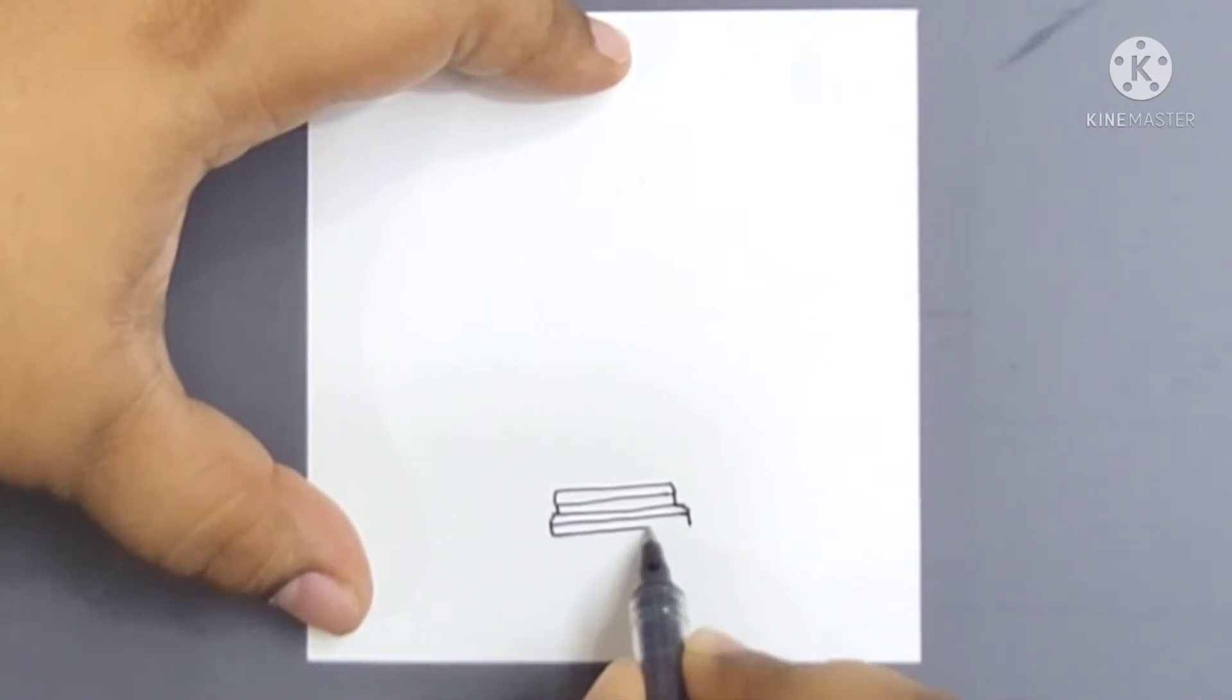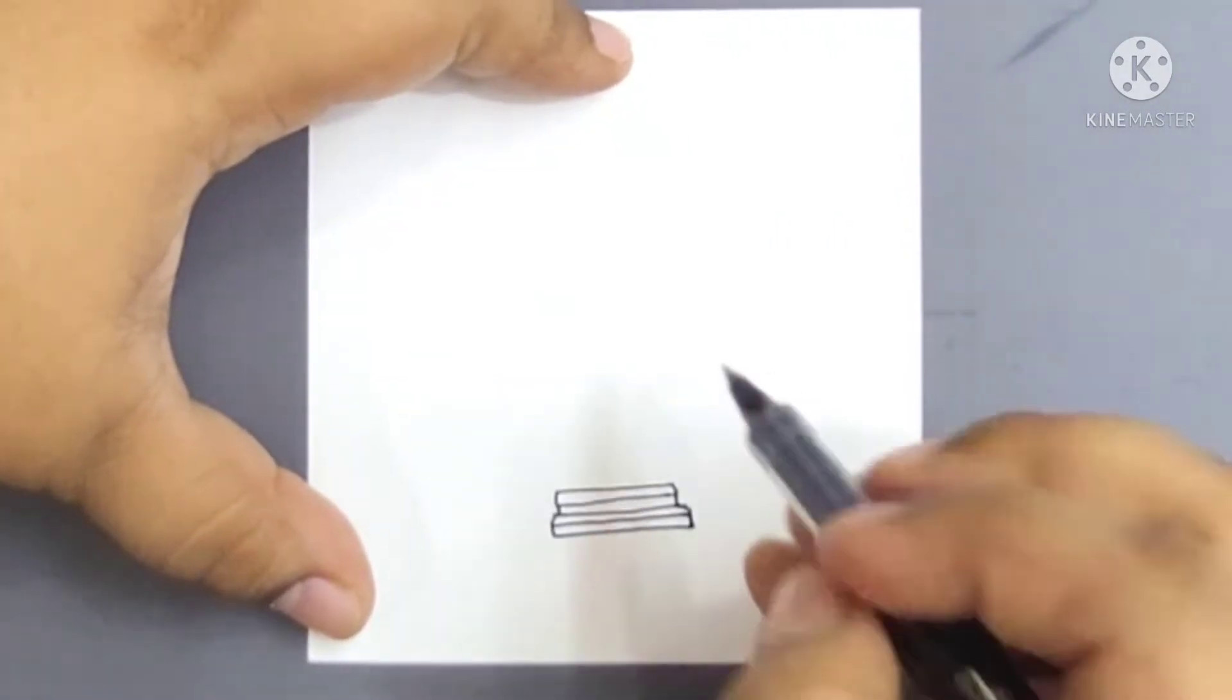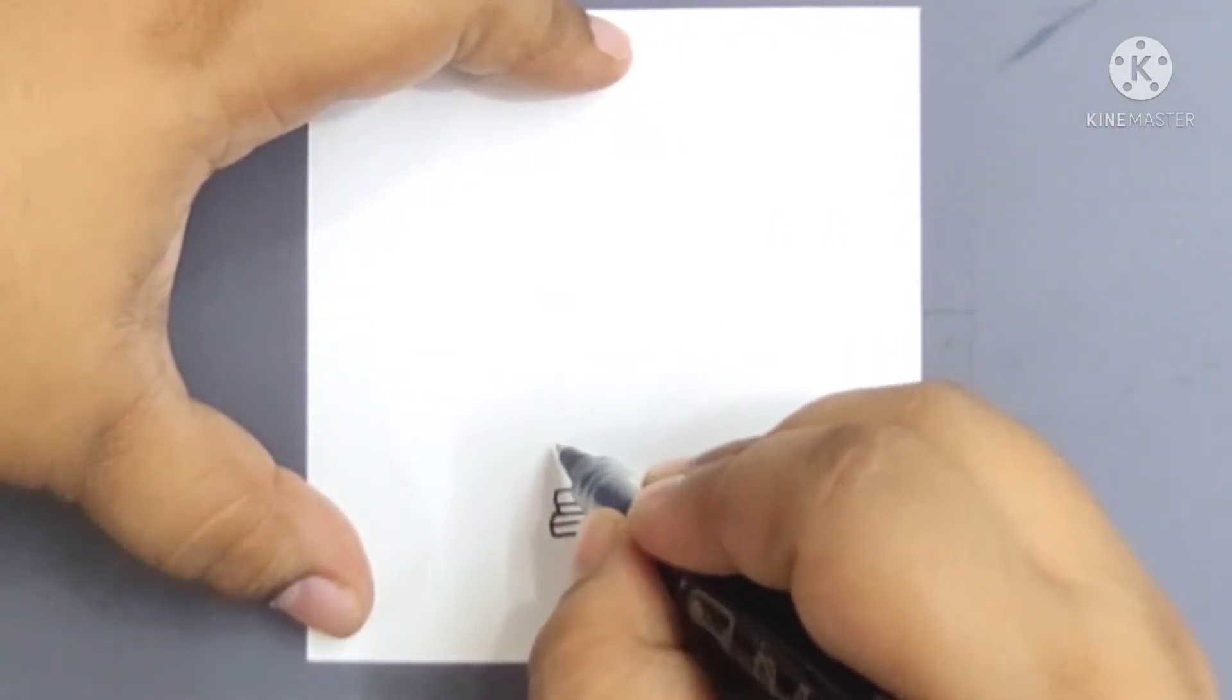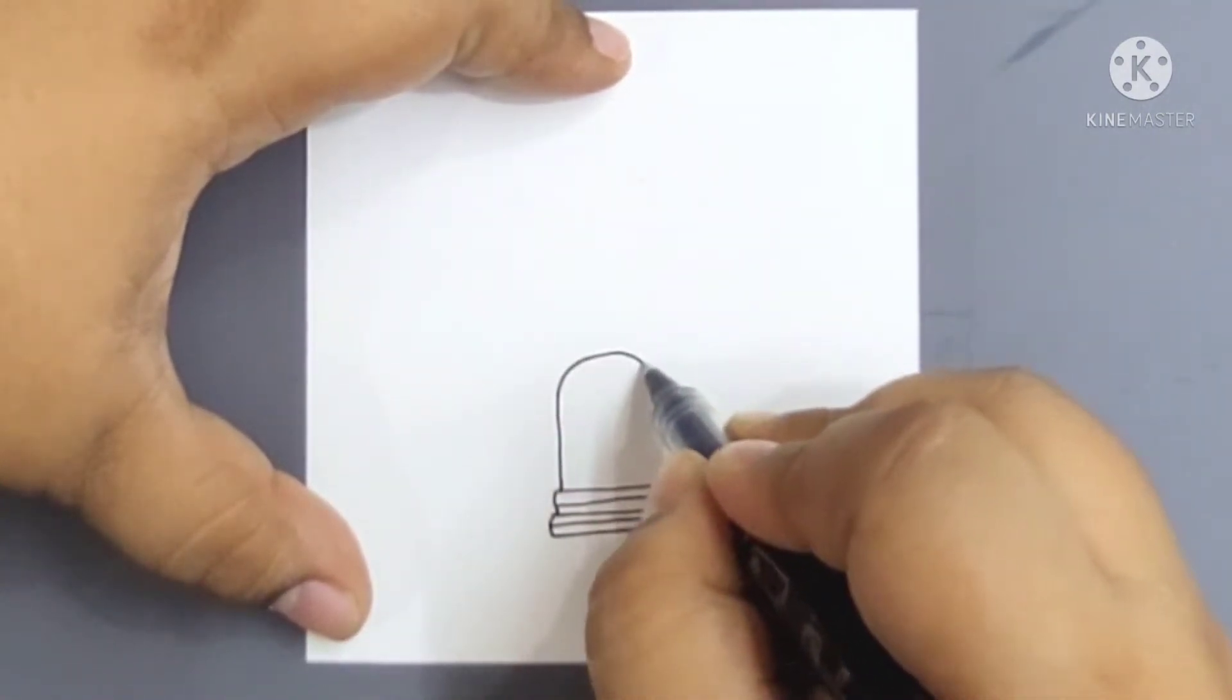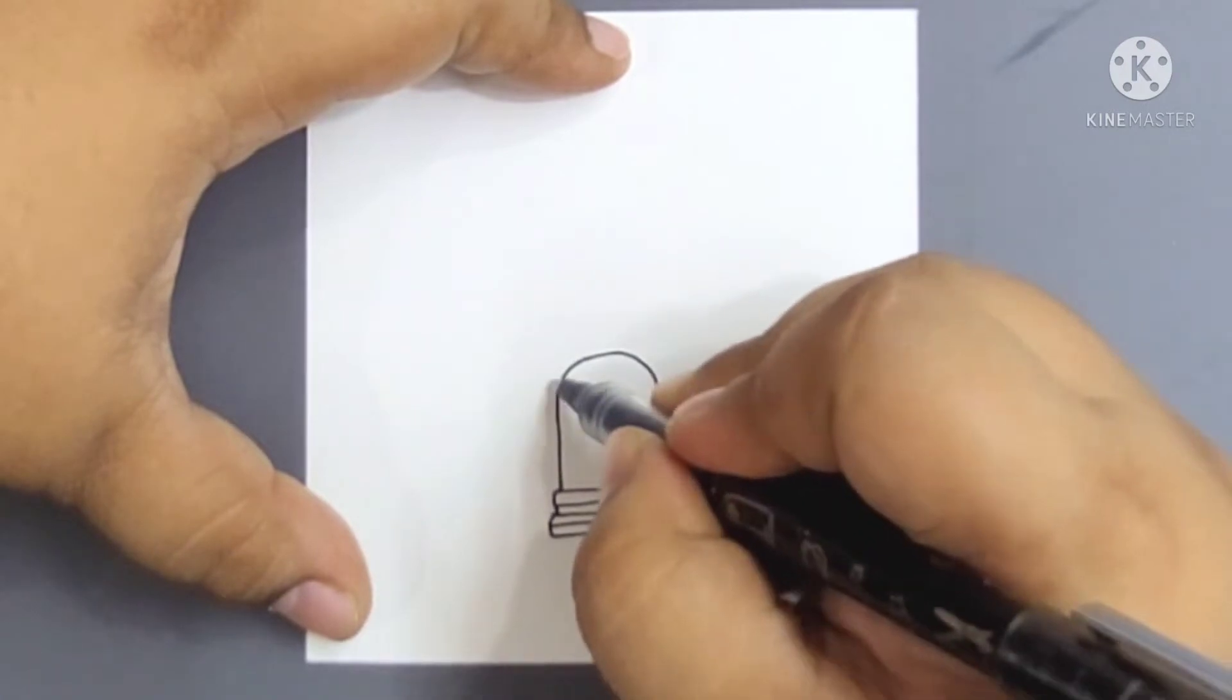If you're not aware what a shank is, never mind. At the end of the video, once the drawing is complete, you'll be able to recognize the kind of shell I'm talking about.